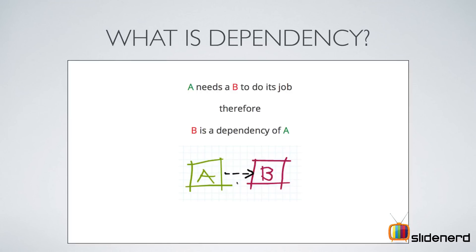Let's take an example where you have two objects A and B. A needs an object B to do its job — therefore B is a dependency of A. This is the definition of a dependency. For example, it could be a customer and an account. You say that customer has an account, so the customer needs an account object to remove or deposit money. This means the customer depends on the account object.